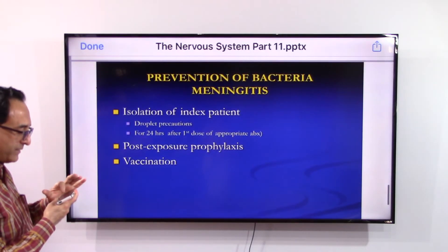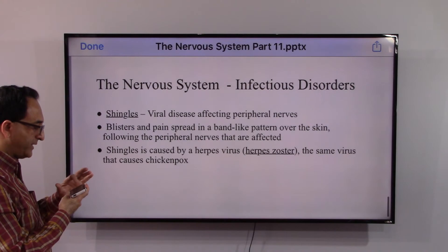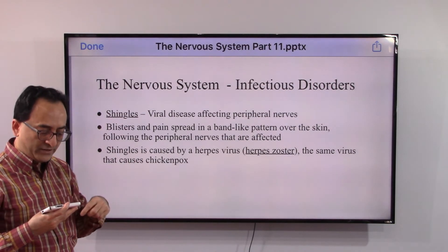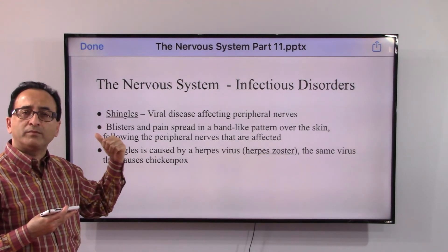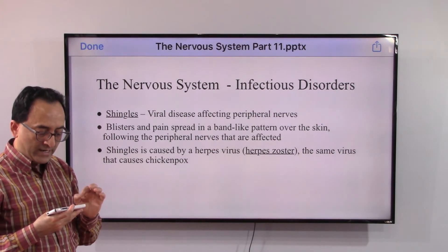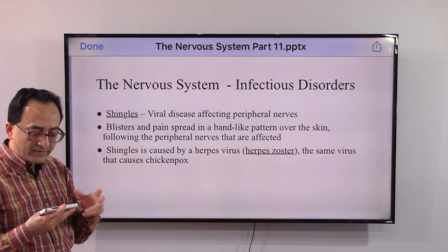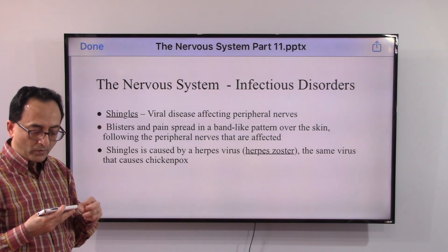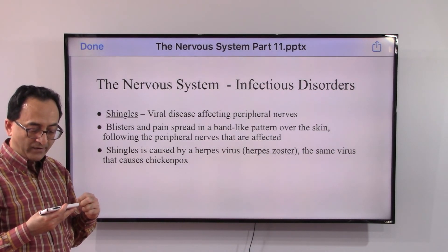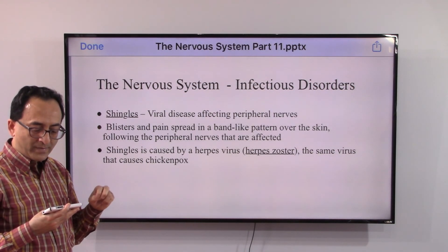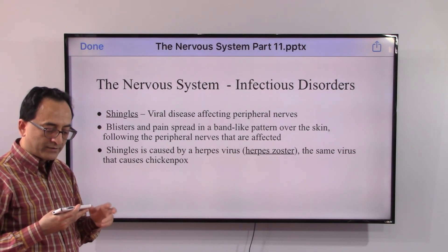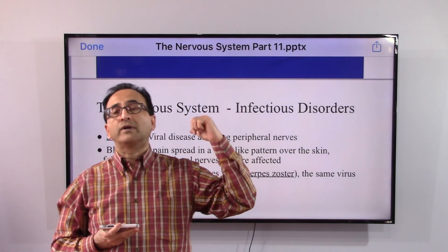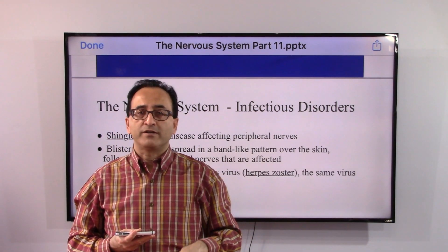As mentioned, we are looking at a couple of disorders within this sub-classification. The first was inflammation of the meninges, and the second is shingles — briefly, that is a viral disease affecting the peripheral nerves and causing blisters. Shingles is caused by herpes zoster, the same virus that causes chickenpox. So that covers the infectious disorders; we will take a look at some other nervous system disorders soon. Take care, bye bye.